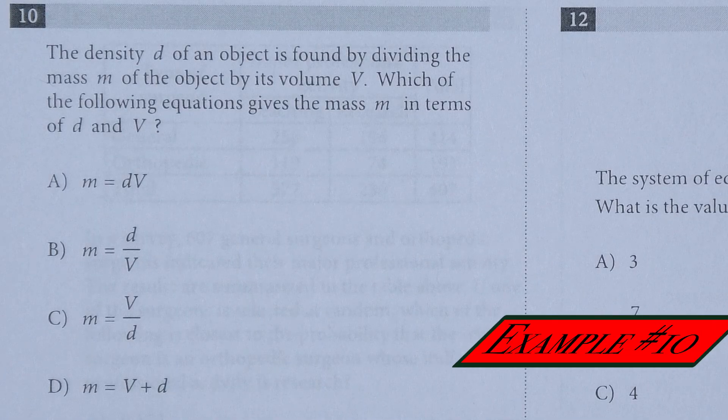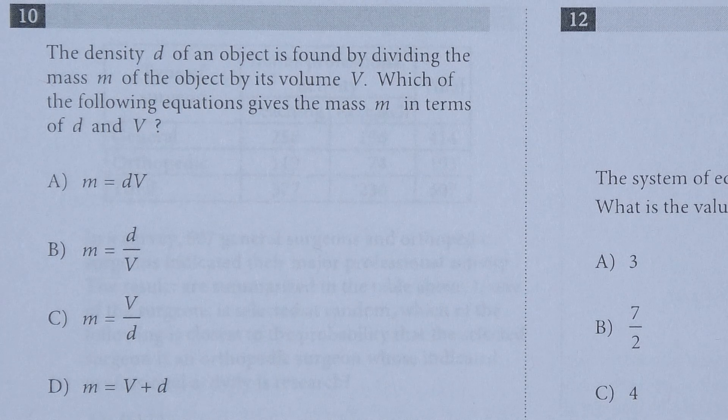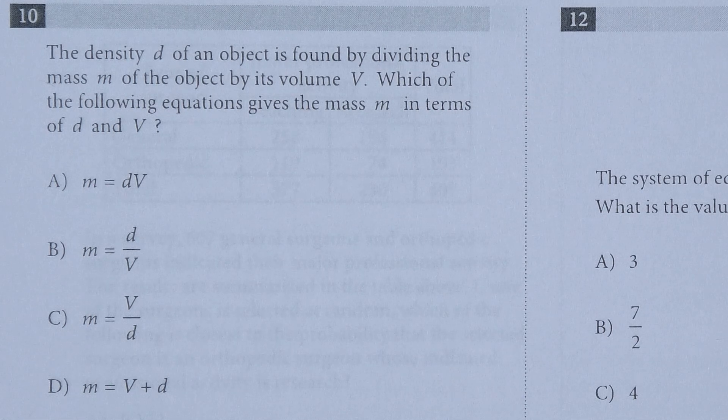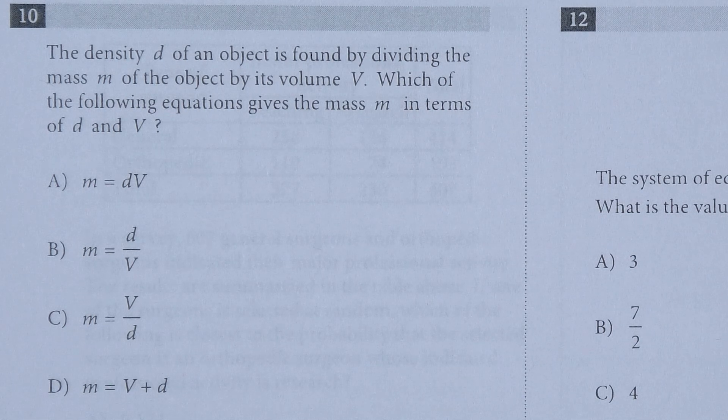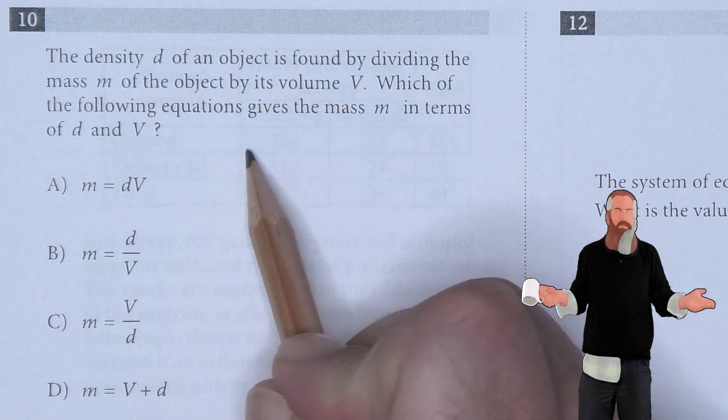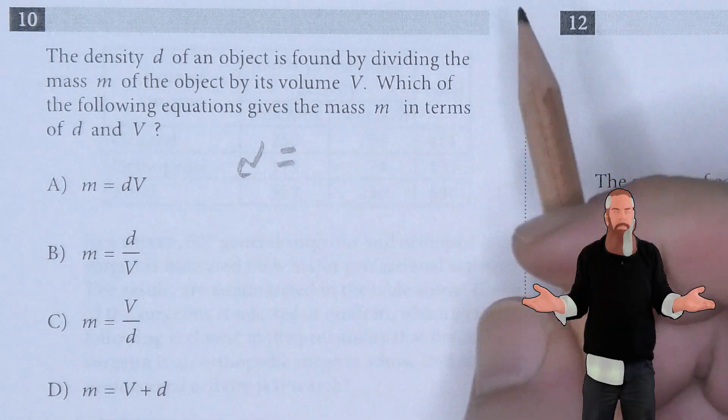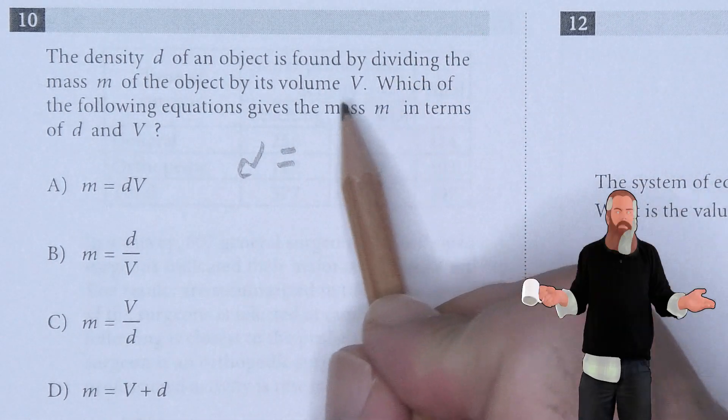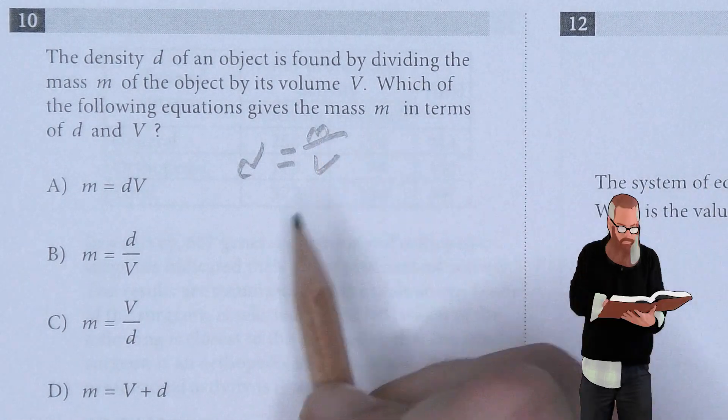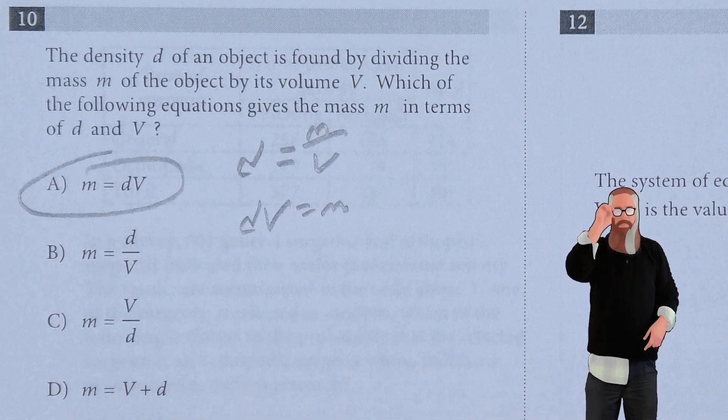The density D of an object is found by dividing the mass M of the object by its volume V. Which of the following equations gives the mass M in terms of D and V? We have to start by writing the equation: D equals M divided by V. We're solving for M. So D times V equals M, meaning A is the answer.